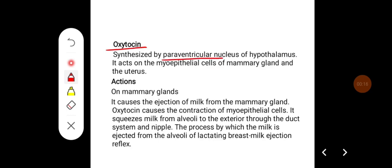Oxytocin is synthesized by the paraventricular nucleus of the hypothalamus and acts on myoepithelial cells of the mammary gland and uterus.